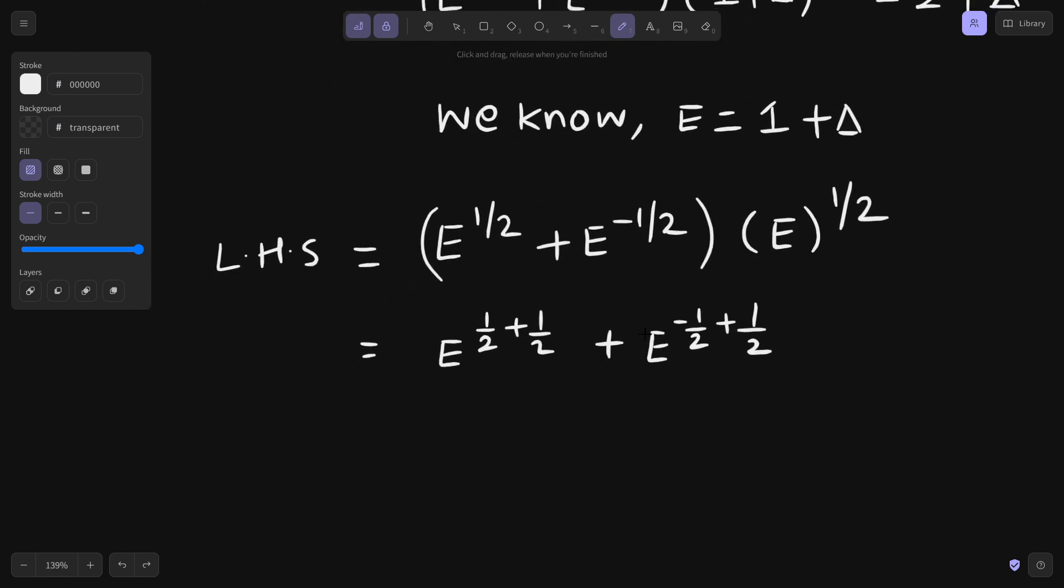So if we look at this carefully, this is E^(1/2 + 1/2) which is E^1 plus E^0. So this is 1 plus E.